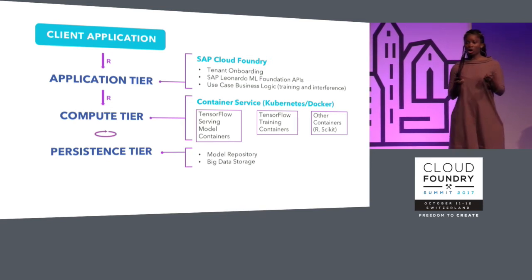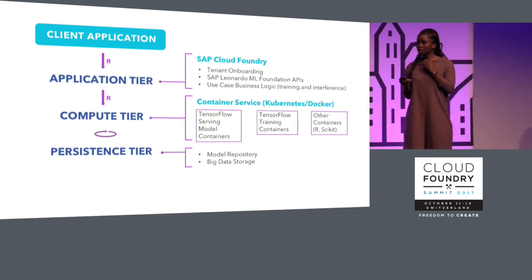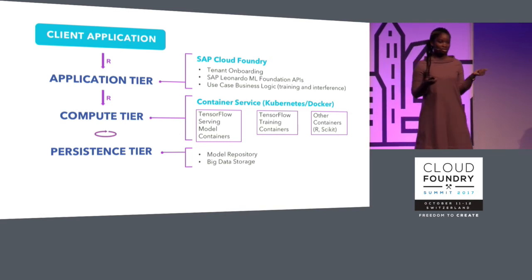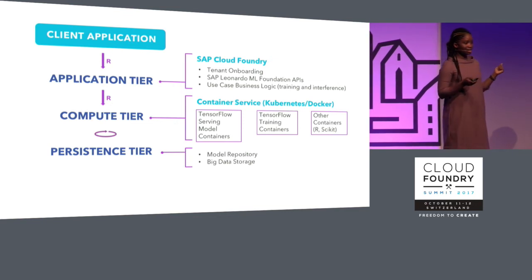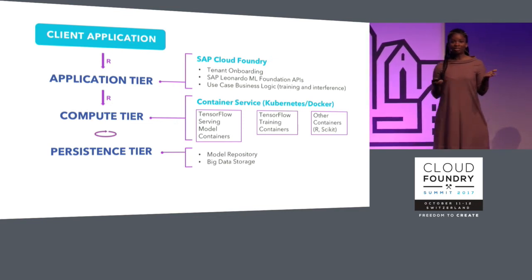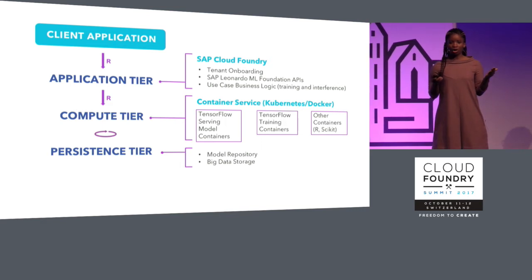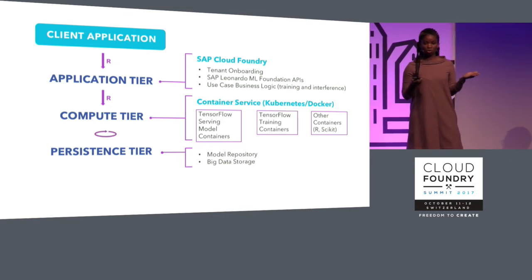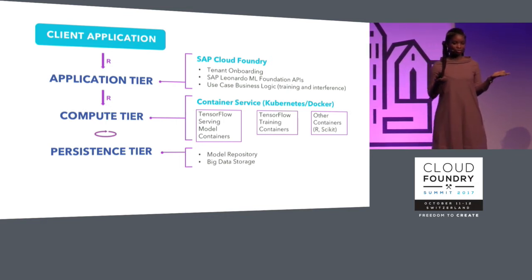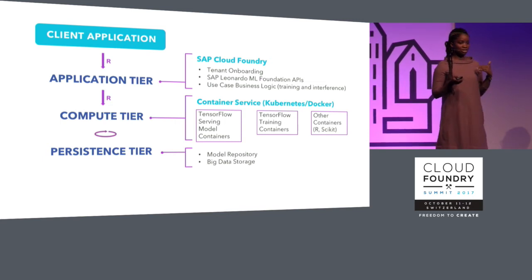The compute tier is where all the heavy lifting is done. It is composed of two kinds of infrastructure: the inference infrastructure and the training infrastructure. For the inference infrastructure, we can host custom models — customers can bring their own models for us to serve. We also host open source models like TensorFlow; for instance, we have the inception model currently running on our TensorFlow server.